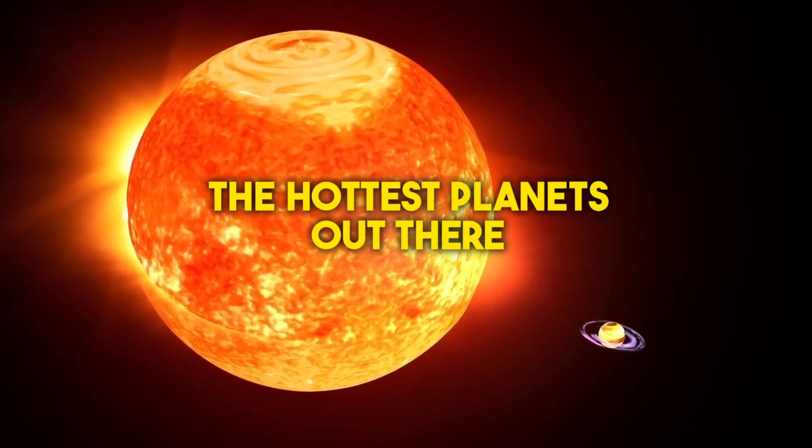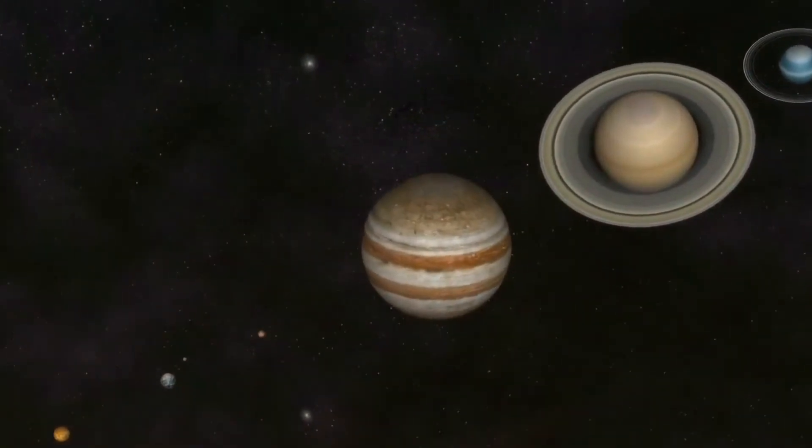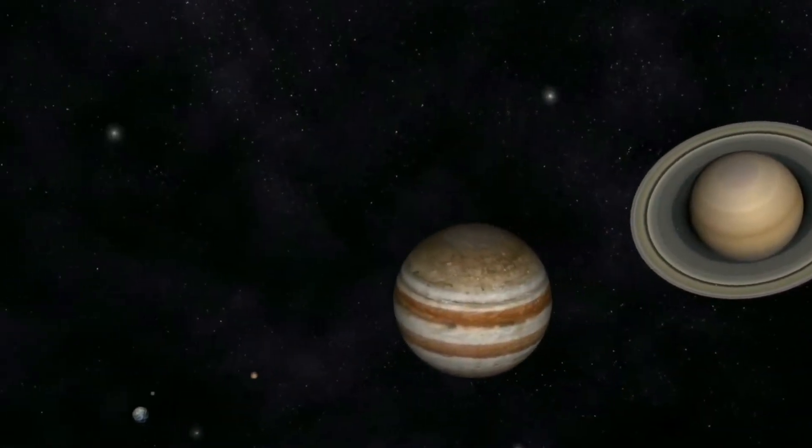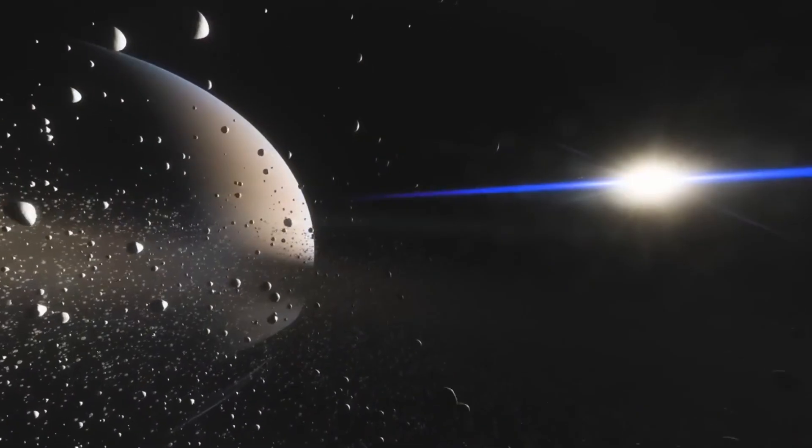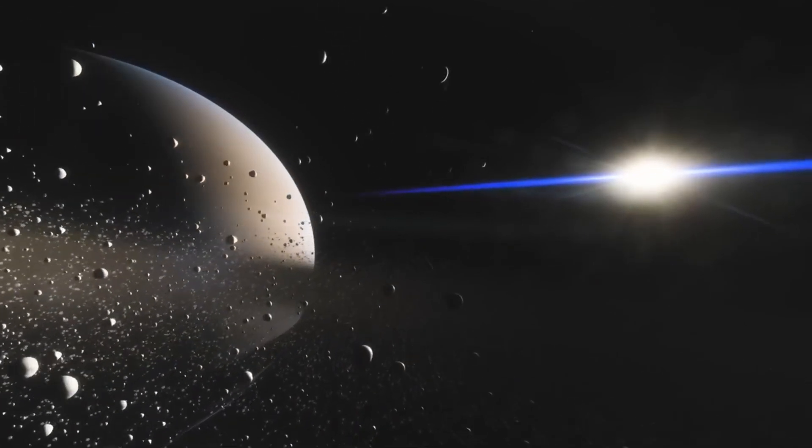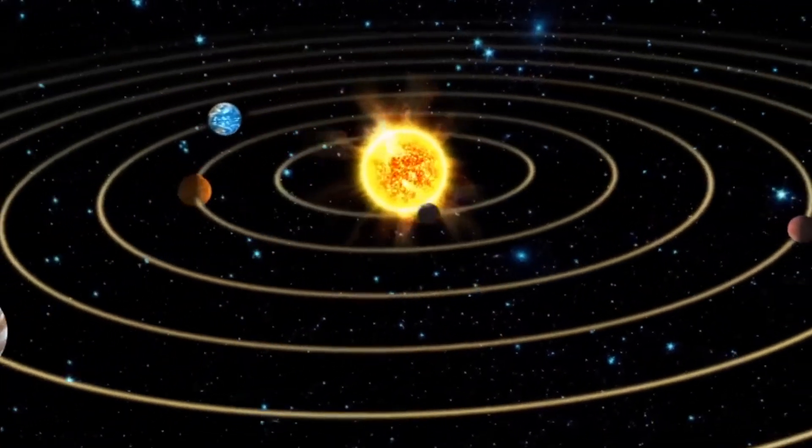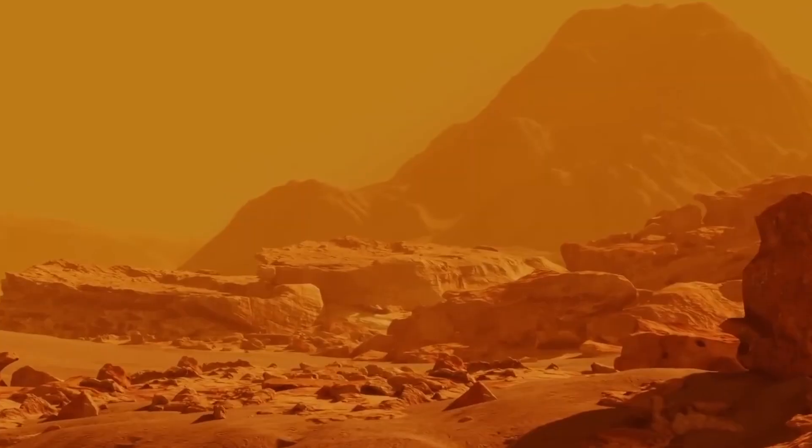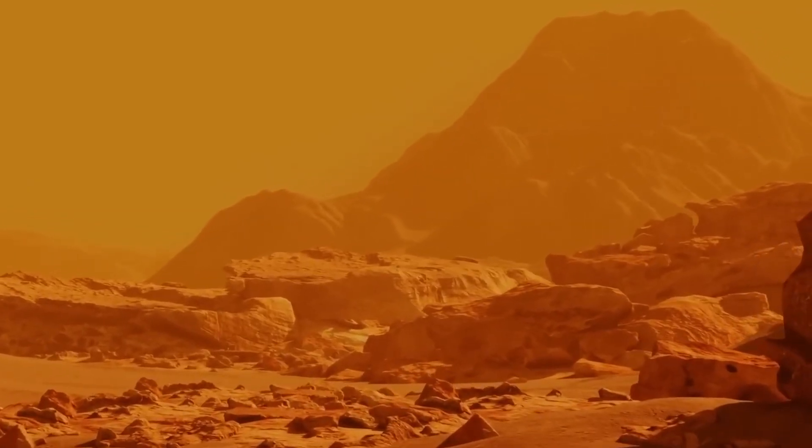Let's start with the hottest planets out there. What is the hottest planet in our solar system? When it comes to planetary temperatures, it's all about proximity to the heat source, the star. And let's not forget, the hotter the star, the more scorching its orbiting planets become.